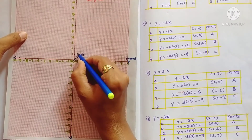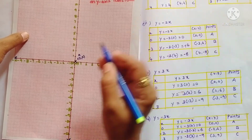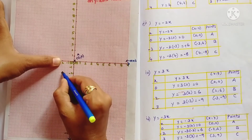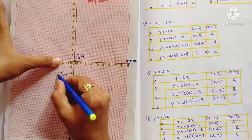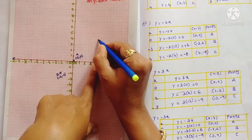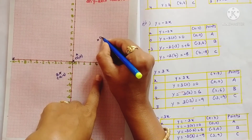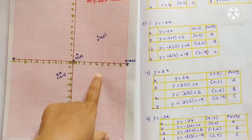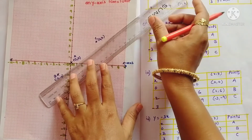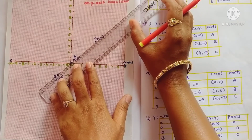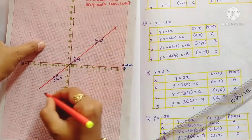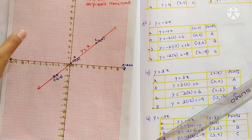Plotting y = x on the graph: point A at (0, 0), point B at (-2, -2) — that is -2 on the x-axis and -2 on the y-axis. Point C at (4, 4) — 4 on the x-axis and 4 on the y-axis. Take the scale and join these three points. This is the graph of y = x.